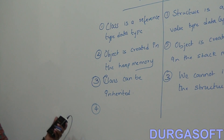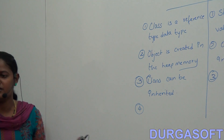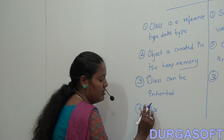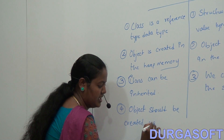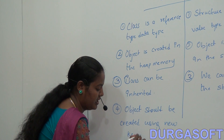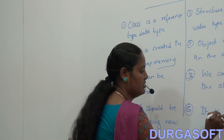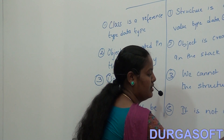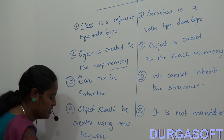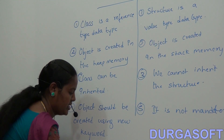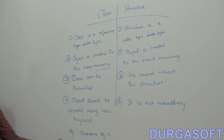In the class, object creation is mandatory, whereas in the structure it is optional. The object should be created using the new keyword for the class, and it is mandatory. Whereas for the structure it is not mandatory. For example, object creation for a class is done like: class name object = new class name.